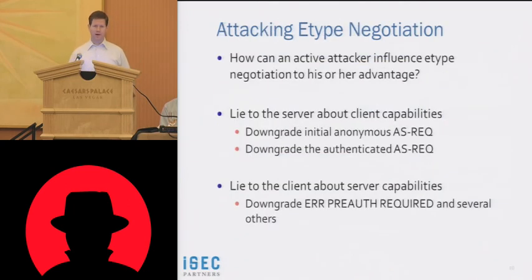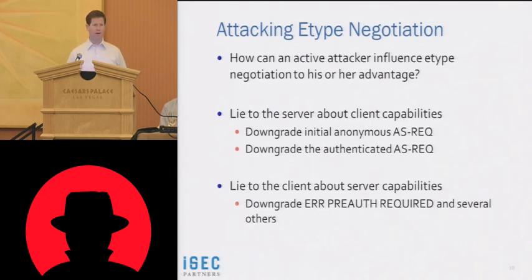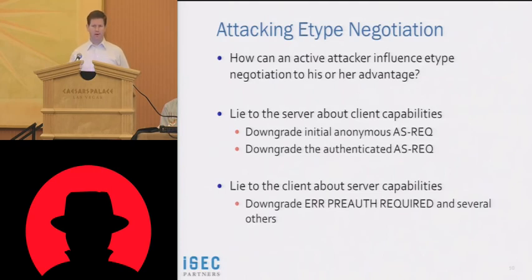Attacking E-type negotiation: it's not exactly apparent from the specifications, the RFCs, or from looking at network traffic. But if you have experience with other protocols that negotiate cryptographic primitives, you might be surprised to find that the list of E-types from both the server and client is unprotected by any integrity mechanism. Right now it's all pre-auth, so an attacker has the ability to drop good E-types and leave bad ones behind. This allows a full man-in-the-middle attacker to drop the good E-types from the client's initial anonymous AS-REQ. The server will then respond with only the weak E-types in the pre-auth required error message. If the client claims to support only DES, the server will say yes and go with DES.